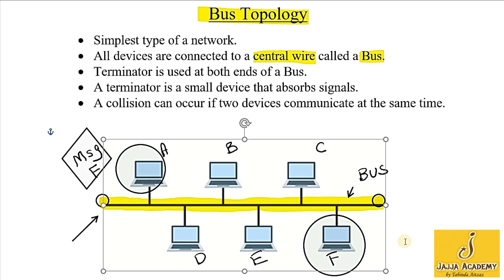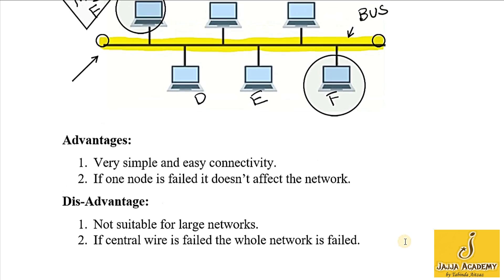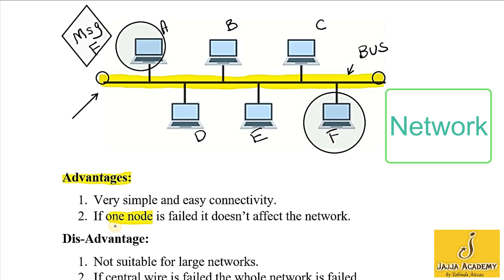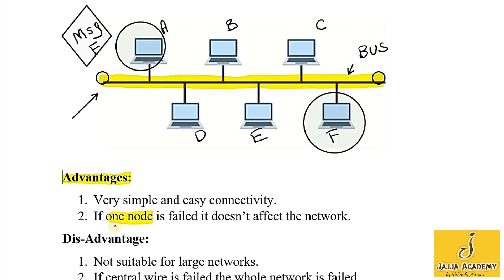Now let's see the advantages and disadvantages of bus topology. Advantages: it is very simple and easy connectivity. The second advantage is if one node fails — a node meaning any device connected to the network, such as a computer, printer, scanner, or any device — it does not affect the whole network. For example, if computer C stops working, it has no effect on the other computers or nodes attached to the same network.